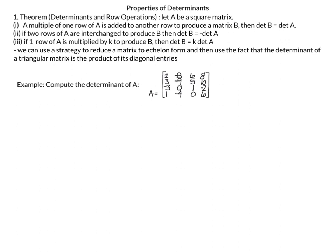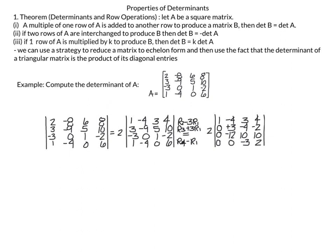The next example is to compute the determinant of A, where A is the 4×4 matrix with column vectors (2, 3, −3, 1), (−8, −9, 0, −4), (6, 5, 1, 0), and (8, 10, −2, 6). I divide the top row by 2, making it (1, −4, 3, 4), but by rule 3 I must multiply the entire determinant by 2, giving 2 times the new determinant.